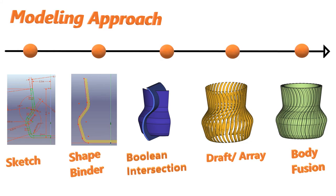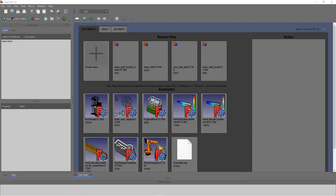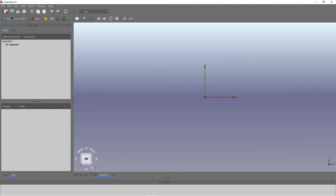Hello everyone, welcome back to the channel. Today I'm going to create a vase with 3D spirals wrapped around it. You can see at the right-hand corner that body. I'll start with a sketch, then use some shape binder to create a second sketch, then boolean operations to create the spiral shape, do a 36-element array, and then fuse the spiral shape to the body.